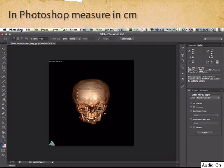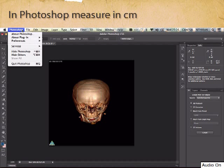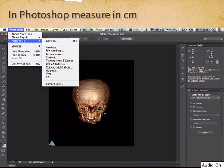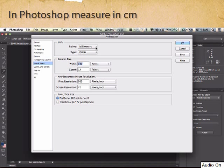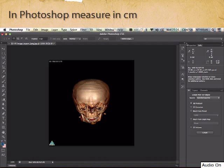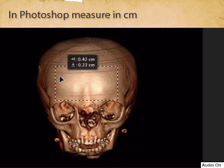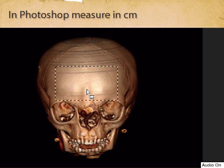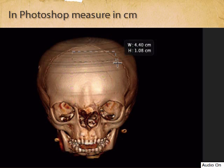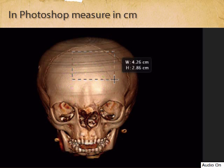To change it to centimeters, go to Photoshop, Preferences, Units. Under the rulers, if you put centimeters, then next time you draw you'll see that it's now in centimeters. So this is how you change the scale on Photoshop.